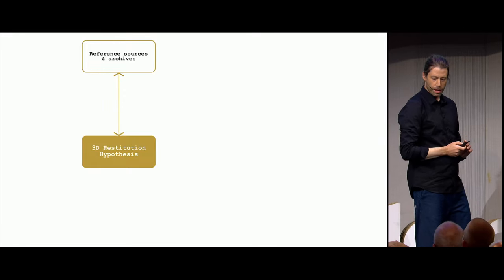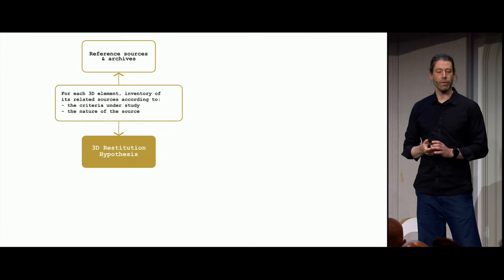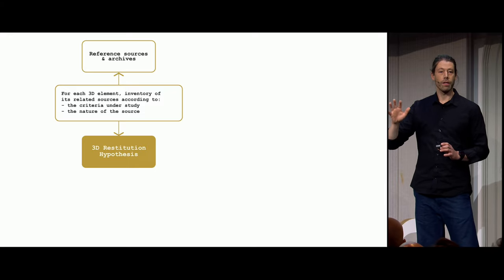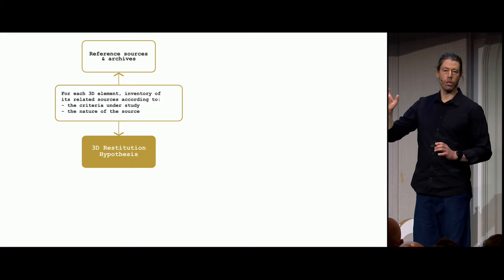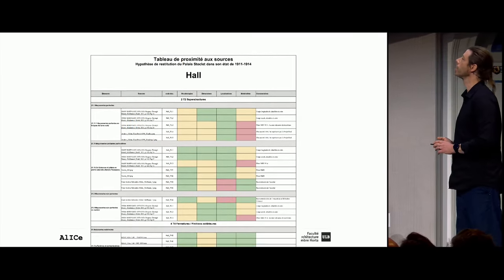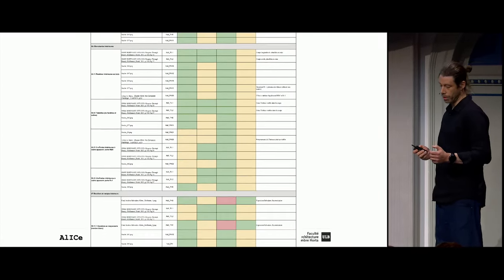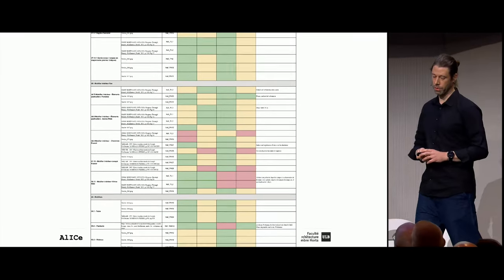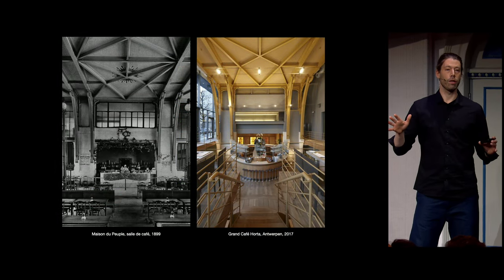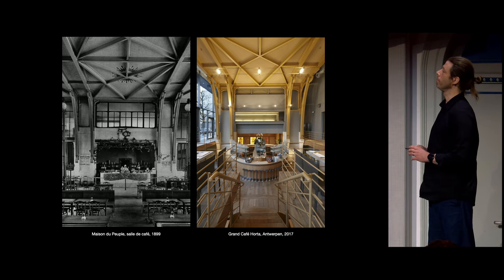In the relationship between the sources, the archives, and the 3D restitution hypothesis, we can create an inventory for each element according to different criteria. I'm going to stick to two criteria — geometry and color — to keep it simple, and then the nature of the source. This list of sources and their different natures is the major influence on the certainty of the hypothesis.